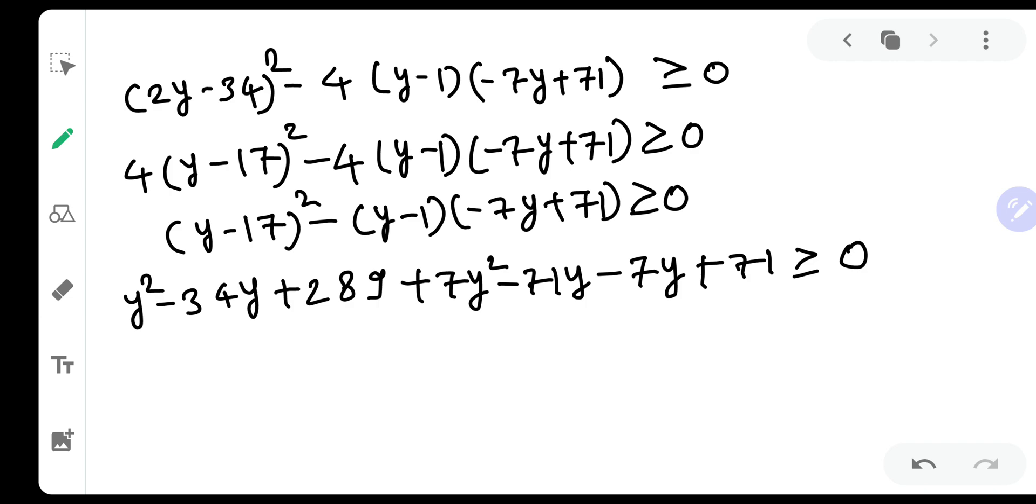Let us check our calculations once. Y minus 17 the whole square is y square minus 34y plus 289. Y multiplied with minus 7y will be minus 7y square but there is a minus outside hence plus 7y square. Y into 71, 71y with a minus it will be minus 71y and there are three minuses, so it will become minus 7y. That's good and minus 71 will become plus 71. Yes, you should always check back your calculations. A little more time consumed is better than having a wrong answer.